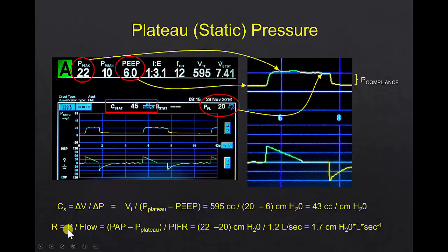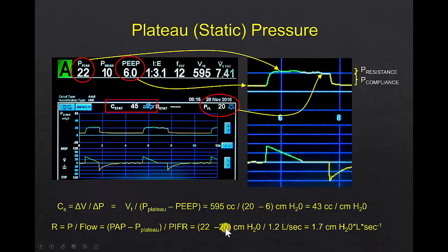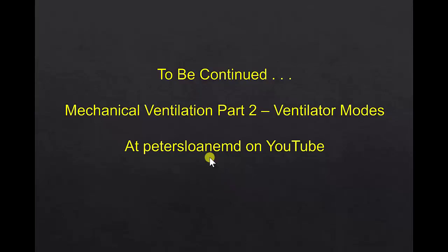Resistance is the extra pressure above the plateau that was going across flow when flow was present. The amount of pressure above the plateau is 22 minus 20, which is 2 centimeters of water. That driving pressure across resistance divided by the flow — set on the machine at 1.2 liters per second — lets us calculate resistance, which in this case is very low. This shows how we measure lung mechanics on the ventilator. This talk will be continued — the main part covering modes of ventilation is coming up in part two.